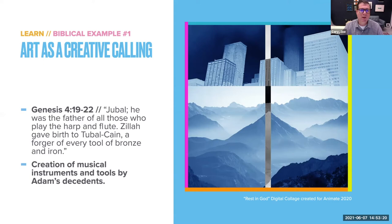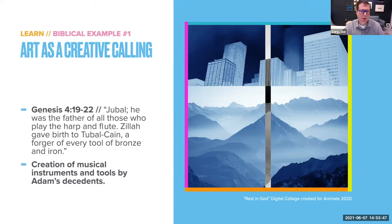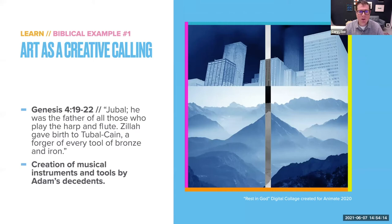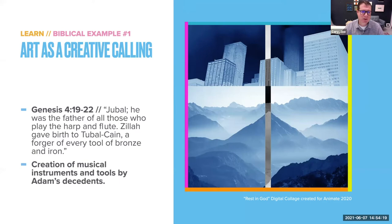In Genesis 4:19, we have Jubal, who is the father of all those who play the harp and the flute — that's our first reference to music. And Jubal's brother Tubal-cain was a forger of every tool of bronze and iron. So you have music, and right next to music you have his brother Tubal-cain creating tools — hammers, knives, chisels — tools that artists will use to make all sorts of different things. We see this right away in Genesis: the creation of musical instruments and the creation of tools. Both Jubal and Tubal-cain are Adam's descendants — I think they're about sixth generation from Adam. So very, very early in the biblical story, we see the arts.